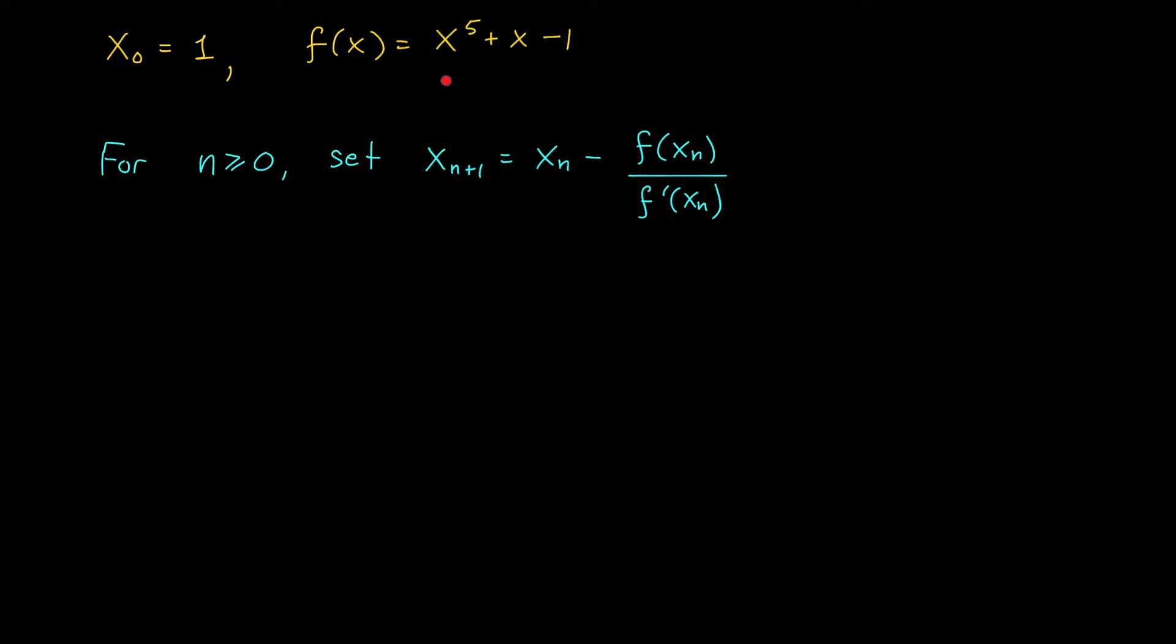Okay, we have our function f of x, our initial guess x naught equals 1, and now we're ready to make our approximations. Newton's method says that for every n greater than or equal to 0, we should set our next term x n plus 1 equal to x n minus f of x n over f prime of x n.